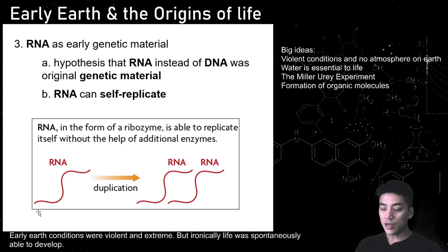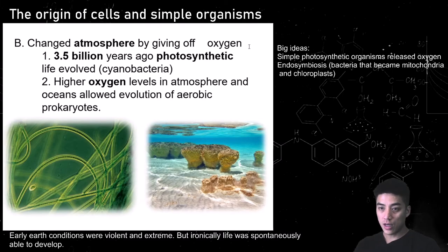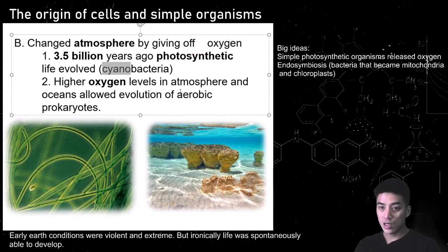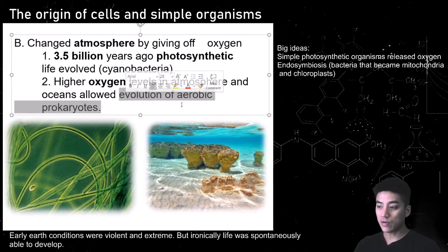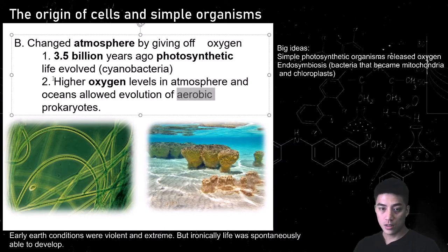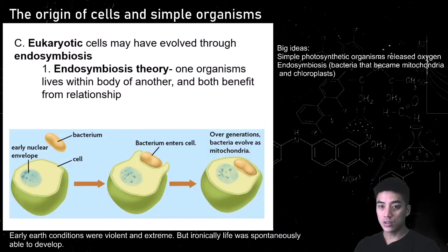RNA was believed to be the original genetic material because it could self-replicate — it could make copies of itself. Photosynthetic cyanobacteria would release oxygen in the process of performing photosynthesis, and this is how you change and improve the atmosphere. Now that you have higher levels of oxygen, this allowed the evolution of aerobic prokaryotes. With oxygen, you can perform cellular respiration and become more and more advanced.